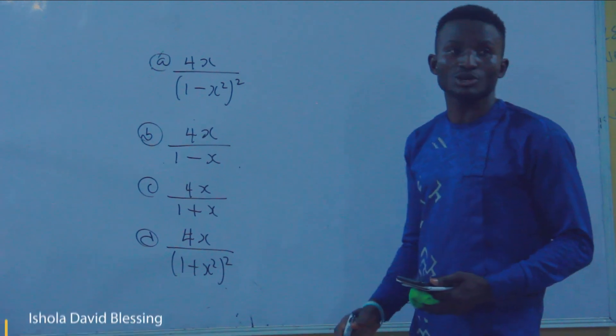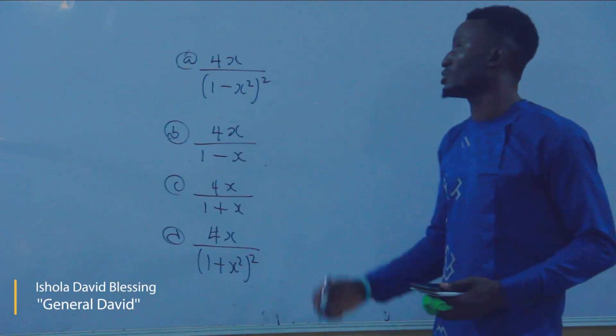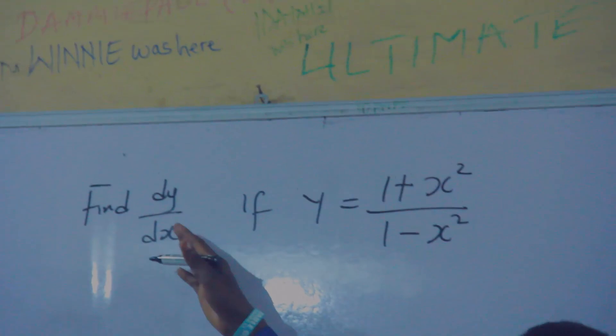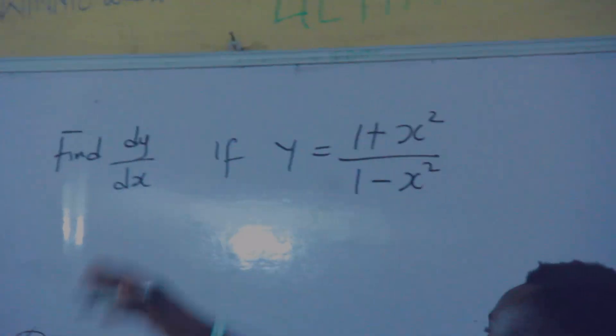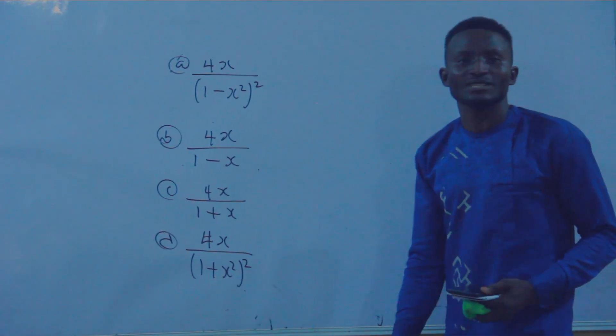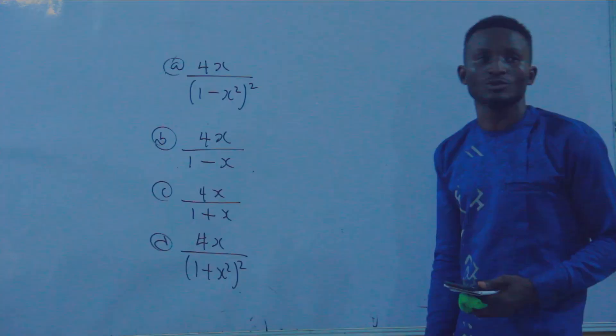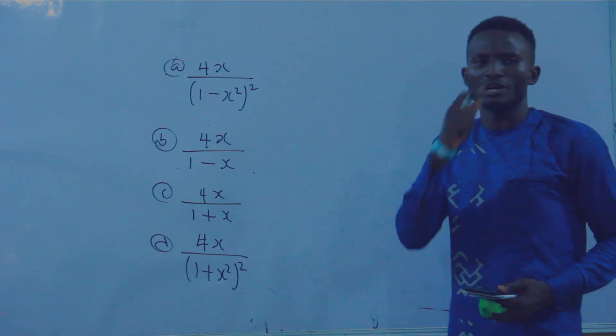Welcome to the calculator class. For this question, if y equals (1 plus x squared) over (1 minus x squared), find dy/dx.